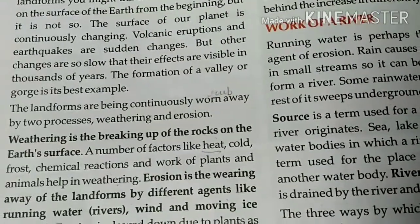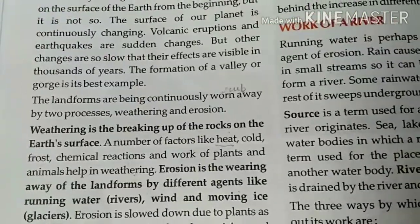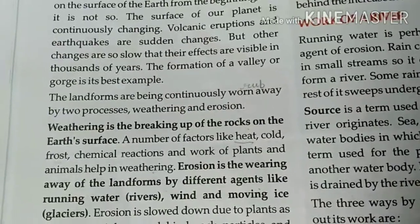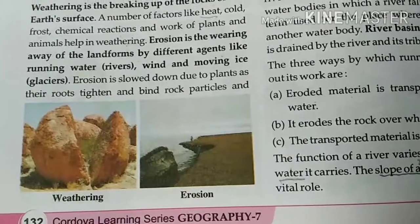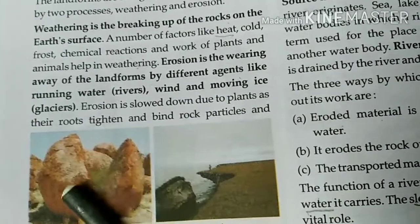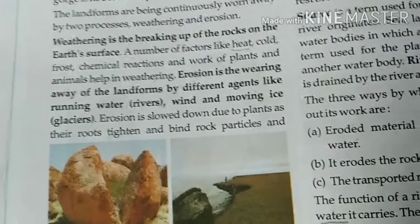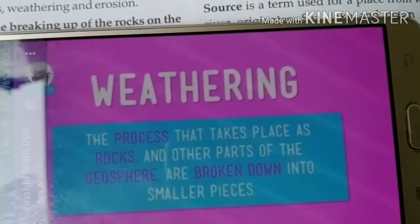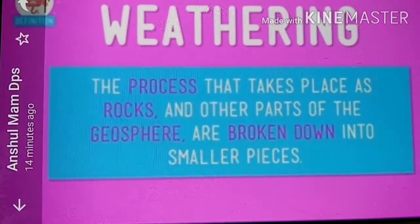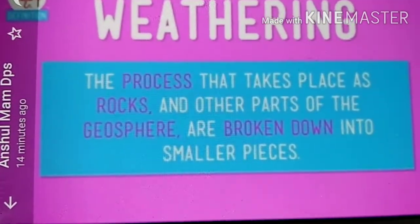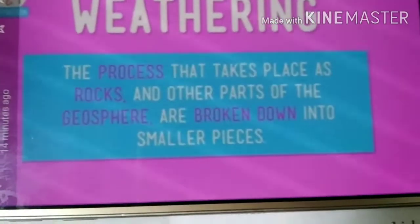Landforms are continuously worn away by two processes. If landforms are changing and the surface changes, there are two reasons — two processes at work. The first is weathering. Weathering is a process where rocks and other parts of the geography are broken down into smaller pieces. This is the process by which the earth's surface is broken down into small pieces.